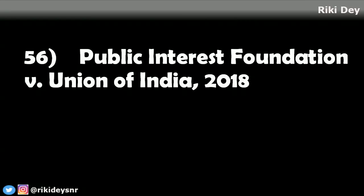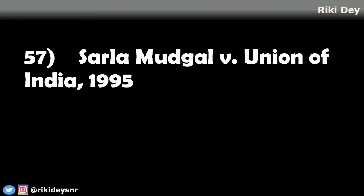The guidelines further require that candidates with criminal antecedents do not enter public life or become lawmakers. Case number 57 is Sarla Mudgal versus Union of India, which emphasizes the need for a Uniform Civil Code. A detailed video on this has been made and the link will be provided in the description.